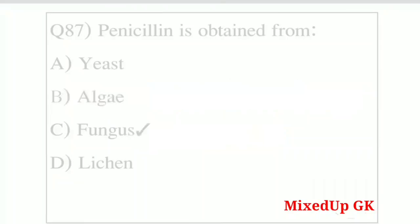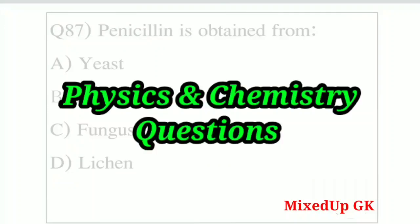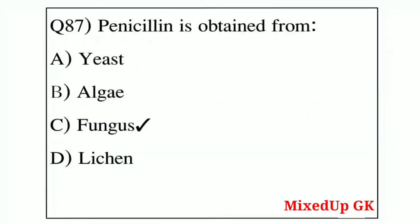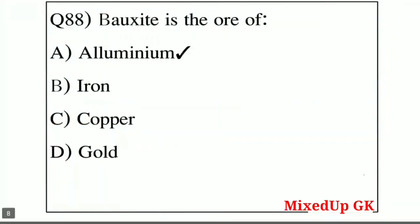These are important physics and chemistry questions being discussed. Question number 87: penicillin is obtained from — Option A: yeast, Option B: algae, Option C: fungus, Option D: lichen. The correct answer is Option C — fungus.